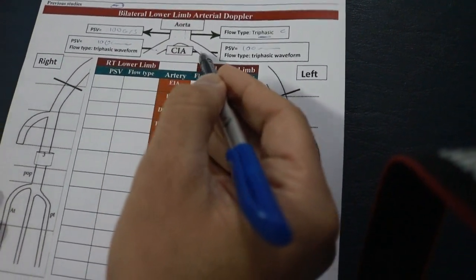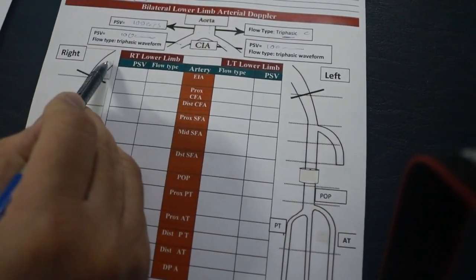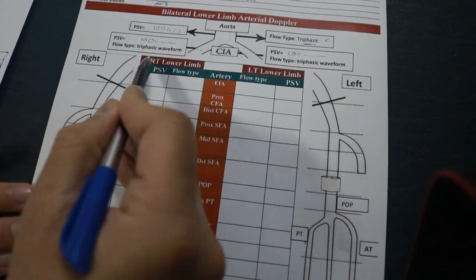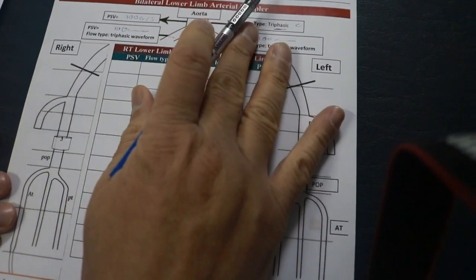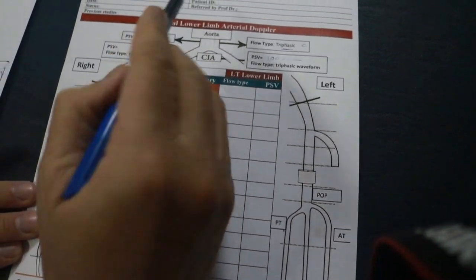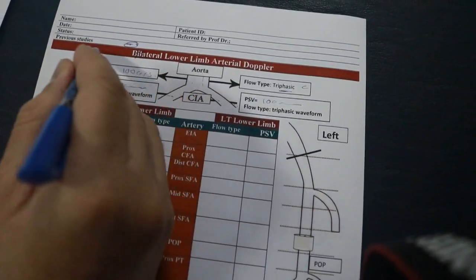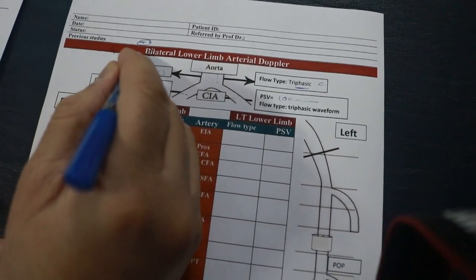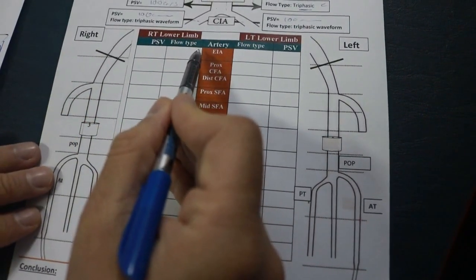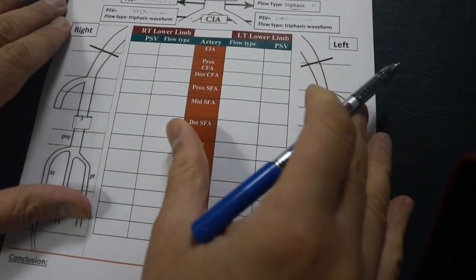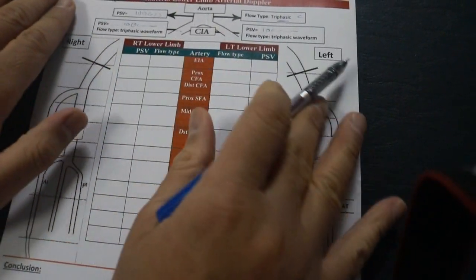Jump directly to the common femoral on the right side. We check the right side but we did not check the left side because the examination was not bilateral. Our examination was right lower limb arterial doppler. Here we create this format.